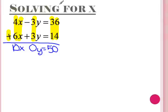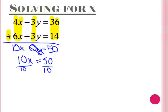Once we get this far, we can just solve it like a regular equation. 10x equals 50, so 10x divided by 10 equals x, and 50 divided by 10 equals 5. So x equals 5.